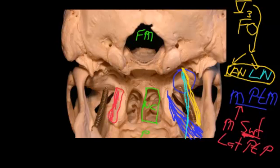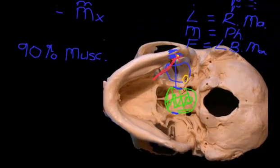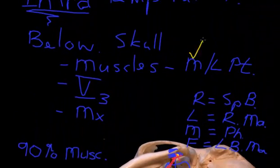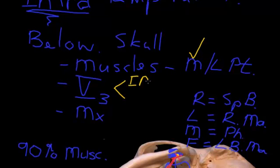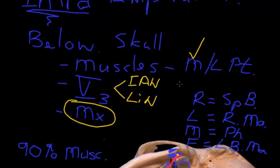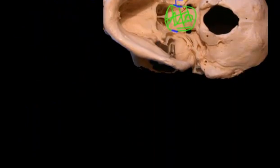When you give an inferior alveolar nerve block, often the anaesthetic solution will actually affect the lingual nerve in this infratemporal fossa. Now let's go back and check off what we've seen: we've talked about the medial pterygoid muscle, the key branches of the mandibular division running through the infratemporal fossa — the inferior alveolar nerve and the lingual nerve. What's left to discuss is the maxillary artery. We'll cover the lateral pterygoid muscle in a separate talk on the muscles of mastication.